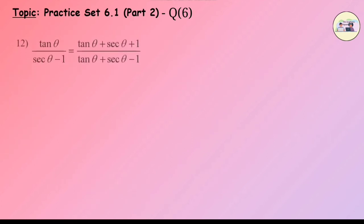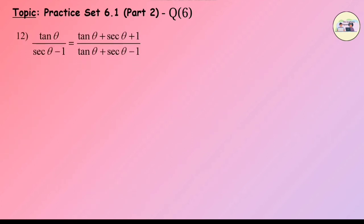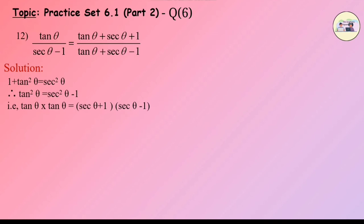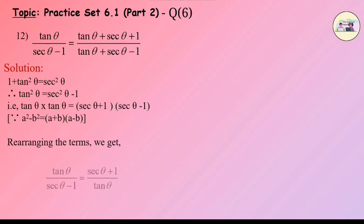Sub Question 12: Prove tanθ/(secθ - 1) = (tanθ + secθ + 1)/(tanθ + secθ - 1). Proof: We must use a special method. Since the question is on tanθ and secθ, we use the identity 1 + tan²θ = sec²θ. Therefore tan²θ = sec²θ - 1, that is tanθ × tanθ = (secθ + 1)(secθ - 1). Rearranging, tanθ/(secθ - 1) = (secθ + 1)/tanθ.